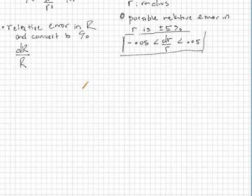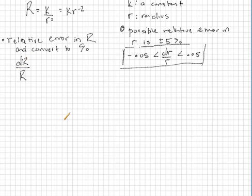Okay, so to find d big R over big R, we're going to take this formula above and differentiate both sides implicitly. That means d big R is equal to k times negative 2 little r to the negative 3, d little r. If I want to find d big R over big R, let's just go ahead and divide both sides by R.